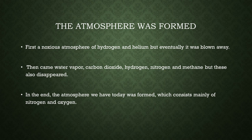But we didn't have an atmosphere here on Earth. First we got a noxious atmosphere based mostly on hydrogen and helium, but eventually it was all blown away. Then came water vapor, carbon dioxide, hydrogen, nitrogen, and methane. But these also disappeared over time. In the end, the atmosphere that we have today was formed, which mostly consists of nitrogen and oxygen.